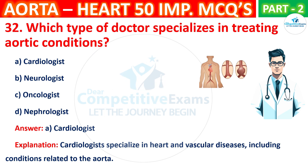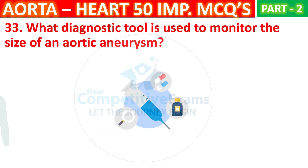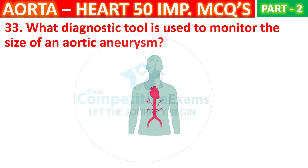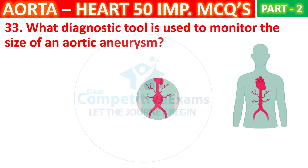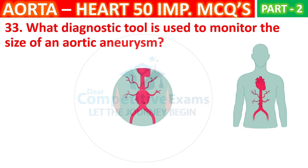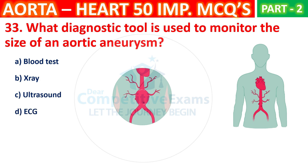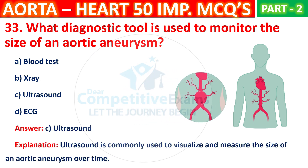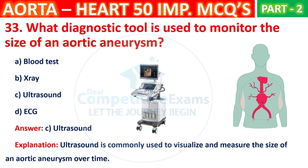Q33. What diagnostic tool is used to monitor the size of an aortic aneurysm? Your options are: Blood test, X-ray, Ultrasound, or ECG. The correct answer is C, that is ultrasound. Ultrasound is commonly used to visualize and measure the size of an aortic aneurysm over time.